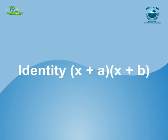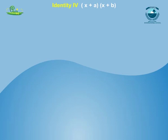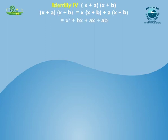Identity 4: (x+a)(x+b). We will now work out one more useful identity. Multiplying the two binomials using the distributive law: (x+a)(x+b) = x²+bx+ax+ab = x²+(a+b)x+ab. This identity can be used in simplifying and evaluating algebraic expressions.